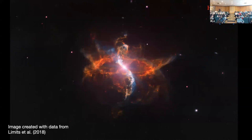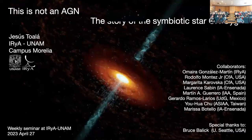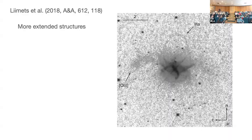This is a color-combined image using three filters just to show you how pretty R Aquarii is. In the same paper, these authors found extremely extended structures which they think are associated with the symbiotic star. But we still do not understand the central part, and we know nothing about the external parts.